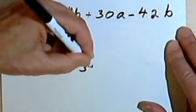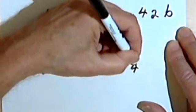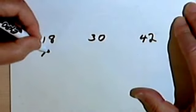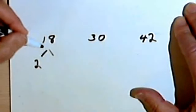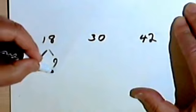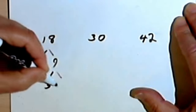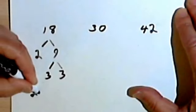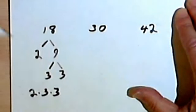18, 30, and 42. Let's start with the 18. So factoring that out, I'll divide it by 2 since it's even. That's going to give me a 9. And as I saw in the previous example, 9 is 3 times 3, so my factors here are going to be 2 times 3 times 3.